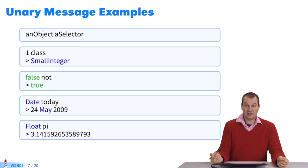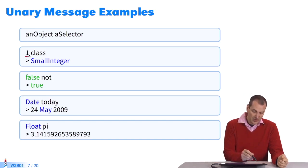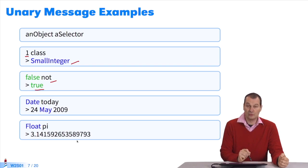Let's see about unary messages. If I ask smallInteger 1 what its class is, it'll return smallInteger. If I send the message not to the boolean false, I get the boolean true. If I query the class date for today's date, it'll return 24 May 2009, for instance. If I send the message pi to the class float, it'll return a representation of the object pi.